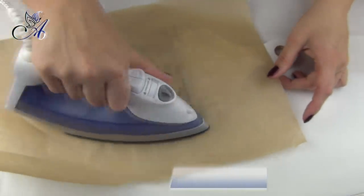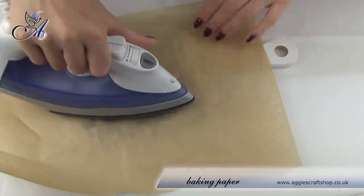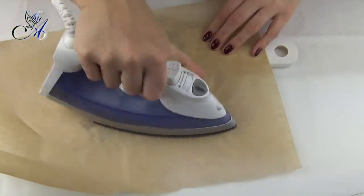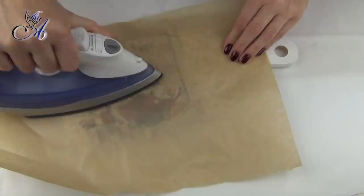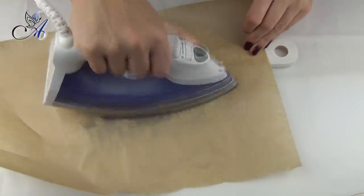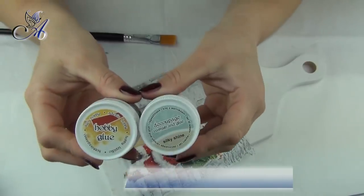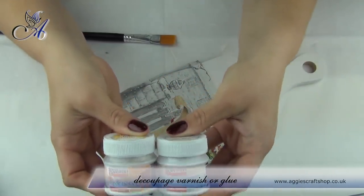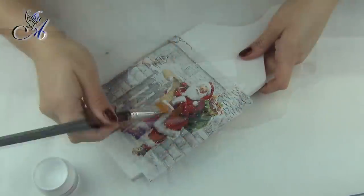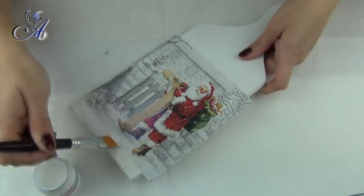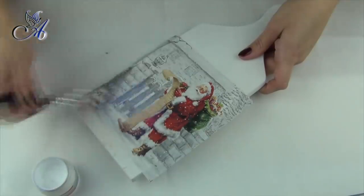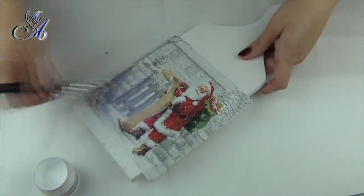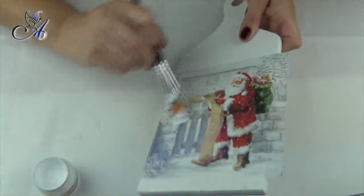When my glue is dry I place top layer of my napkin on the board, I cover it with baking paper and I start ironing. You need to set your iron on medium heat and switch steam function off. Take your time and make sure edges are glued properly. When everything cools down I apply one coat of decoupage glue on top of my napkin to seal it. In this case less glue is better. You can also use varnish if you want to.